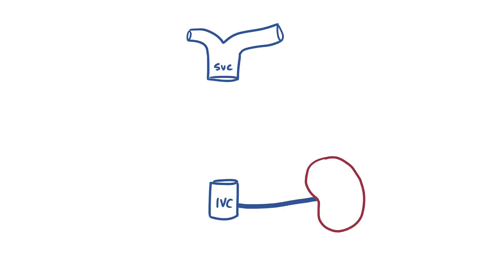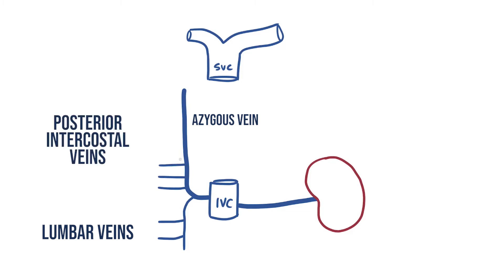The azygos vein normally originates from a root coming off the IVC at around T12 to L2. This merges with the ascending lumbar veins, before traveling up the body and into the chest. As it ascends it receives blood from most of the posterior intercostal veins that drain the right hand side of the thoracic wall.